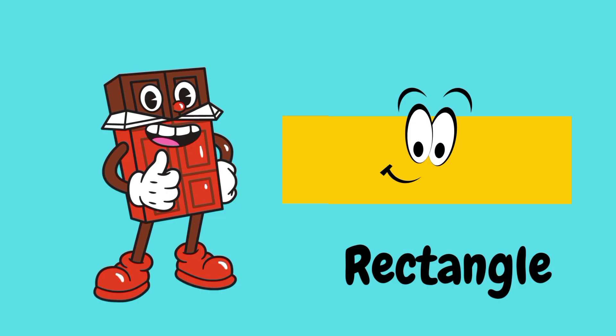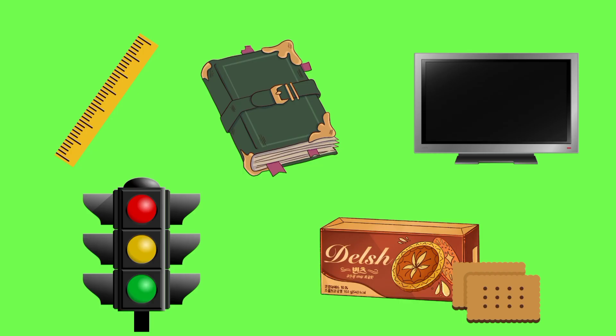It's a rectangle. A rectangle has four corners, and the opposite sides are equal. Can you name the things which are in rectangular shape?